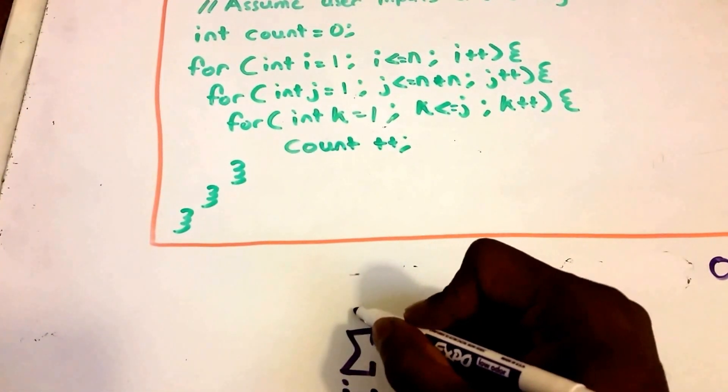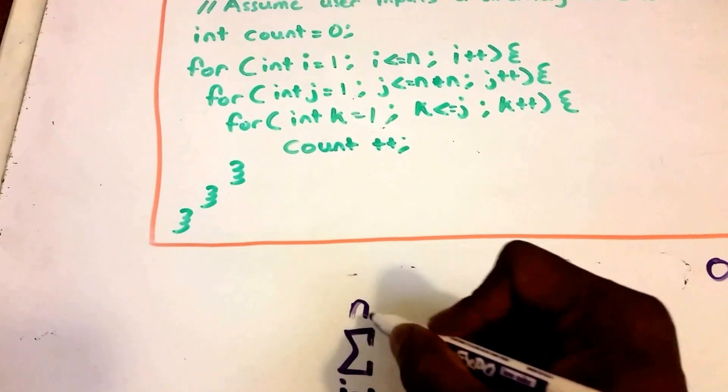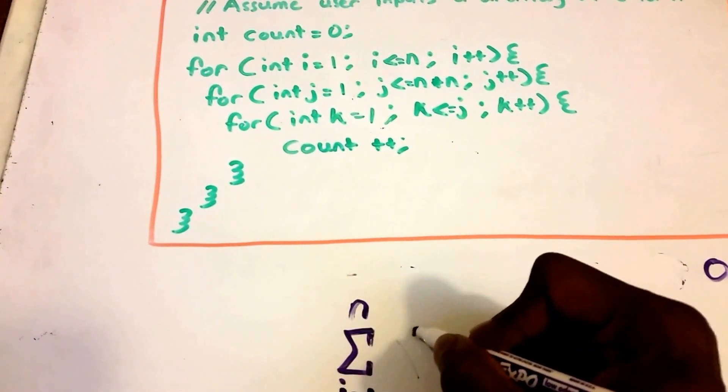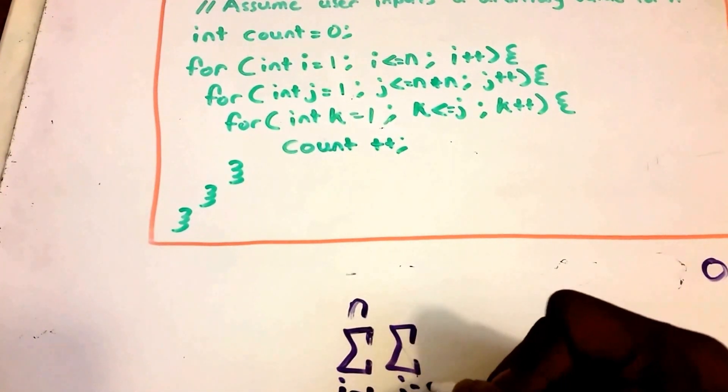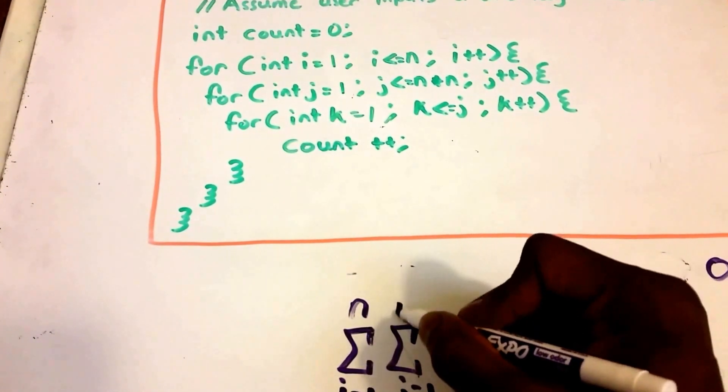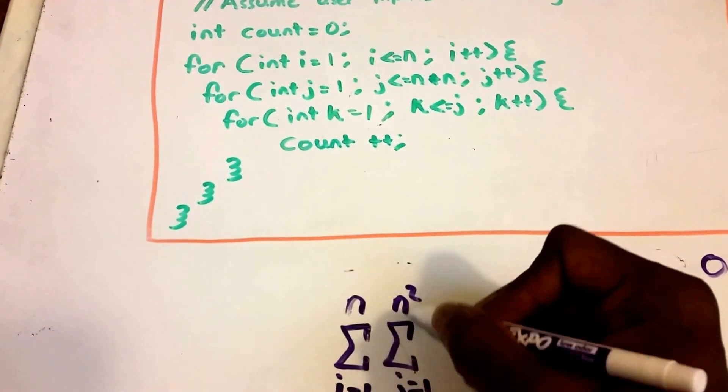And then within that loop we have a second loop that runs from j equals one all the way up to n times n, so I'm gonna put n squared here, that's n times n.